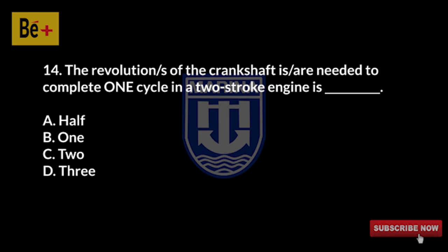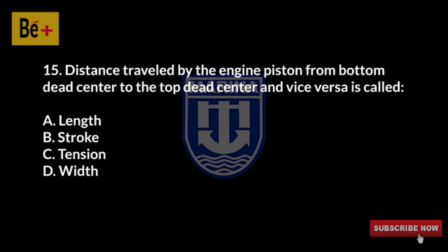The number of crankshaft revolutions needed to complete one cycle in a two-stroke engine is: A) half, B) one, C) two, D) three. The answer is B, one.